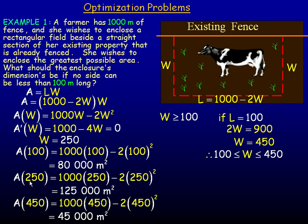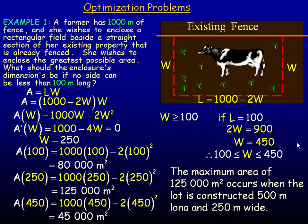So that means that the width is 250. Now if we look over here. So if this is 250 and this is 250, that's 500 altogether. So then this side would have to be 500 here. So it's actually twice as long as it is wide. So 250 and 250 is 500. So we need 500 here. So that's the length. So then we can answer, the maximum area of 125,000 square meters occurs when the lot is constructed 500 meters long and 250 meters wide.